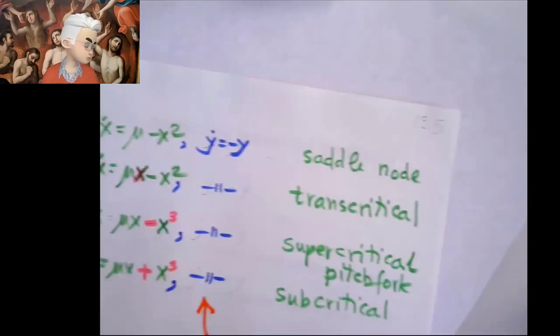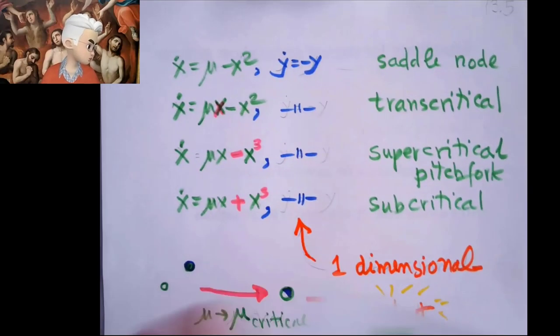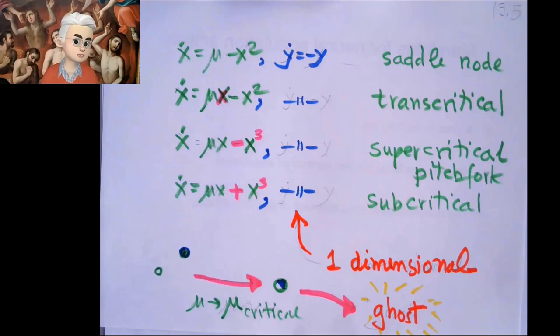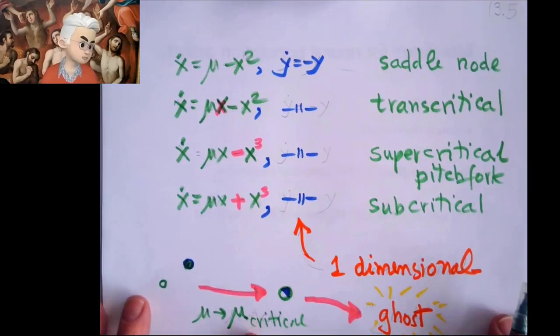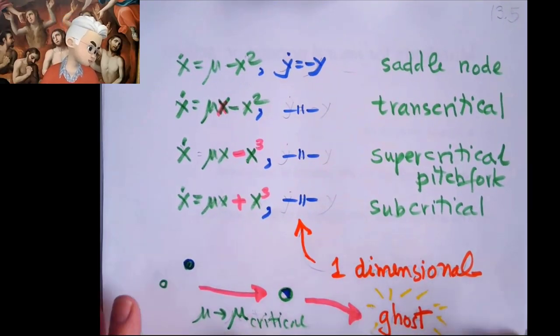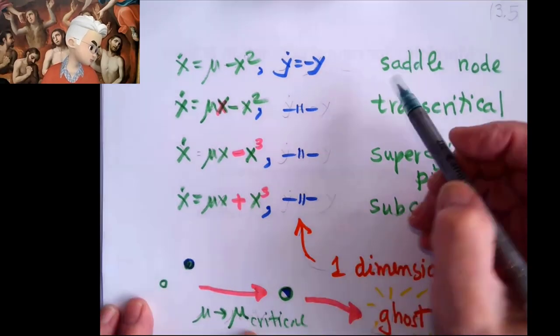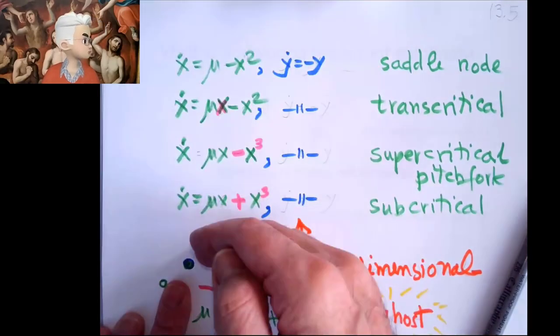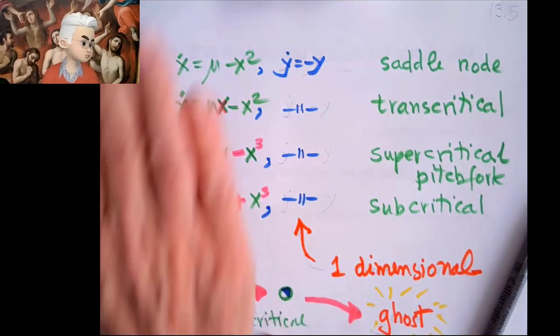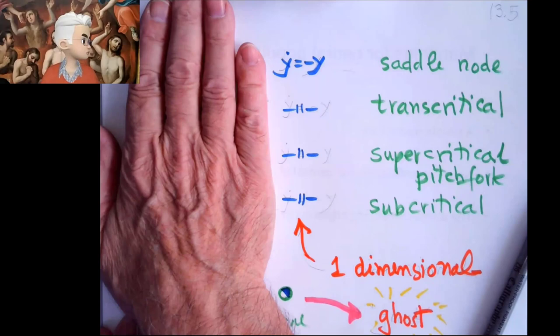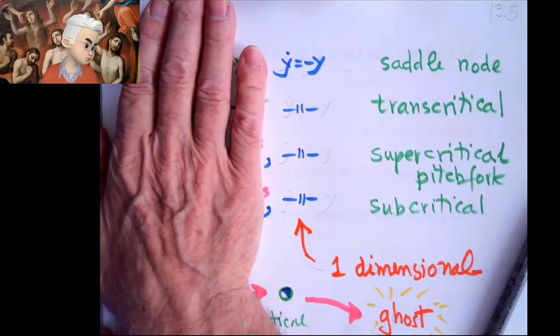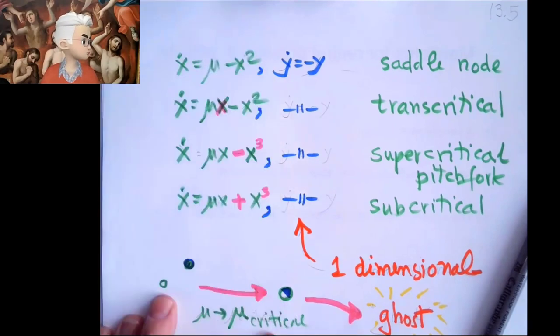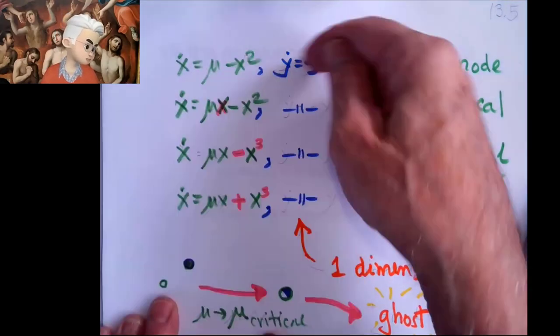And going back to what we learned about bifurcation in chapter three of Strogatz's book, we cheat in the same way. We just make a list from one dimension and then we stick in the second dimension by making my two-dimensional flow go to the one-dimensional.